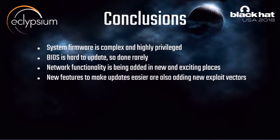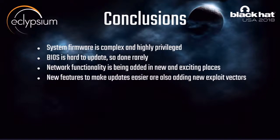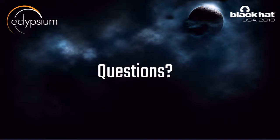In summary: system firmware is large, complex, highly privileged software that runs before the OS loads. BIOS has had many historical issues and the update process is still messy. This remote attack surface keeps appearing in new places — components that didn't previously have network exposure now do, partly because vendors are trying to solve the update problem by adding new features, and in doing so are inadvertently adding new exploit vectors. We've reached the end of our time — does anyone have questions?